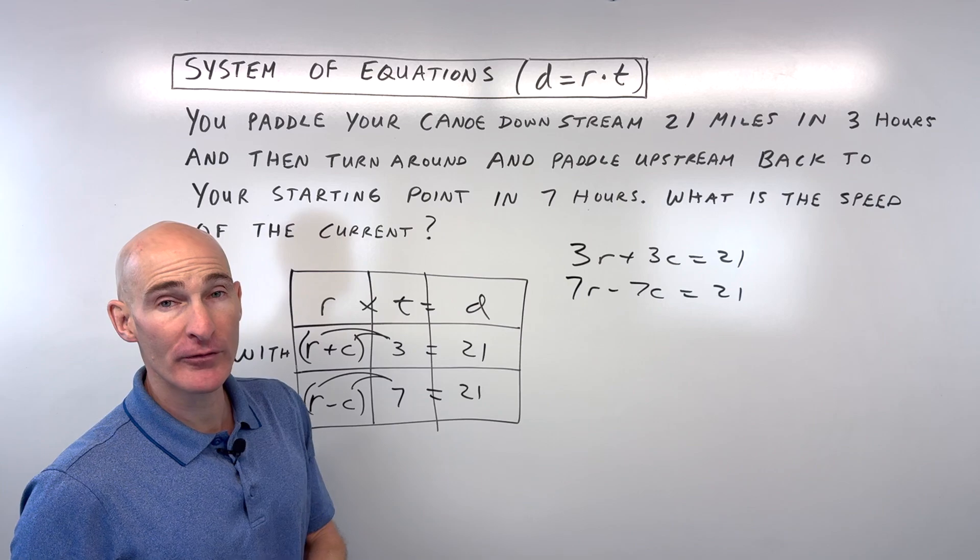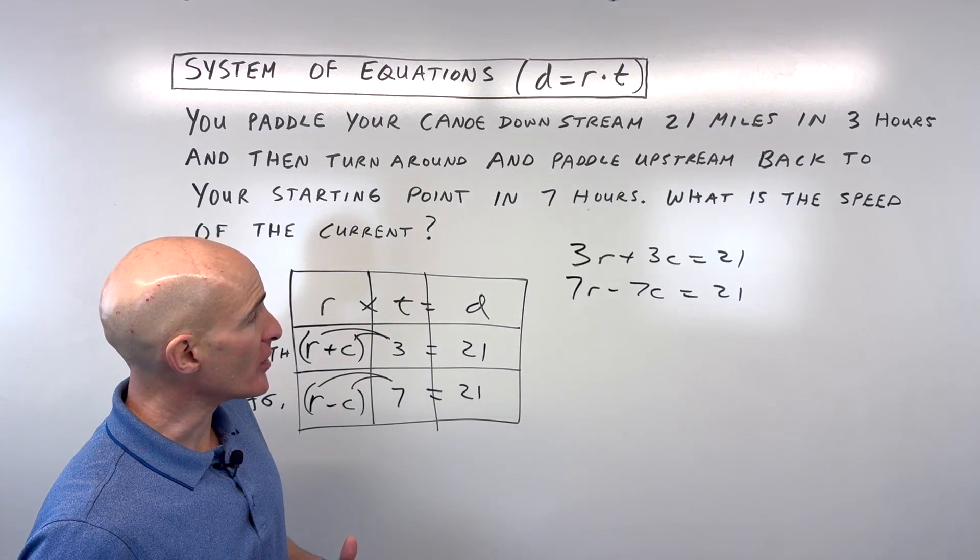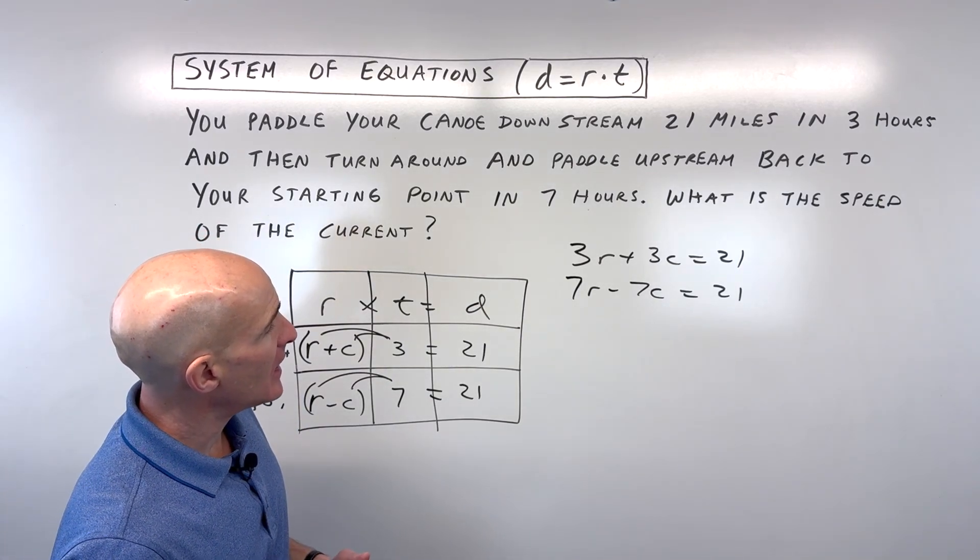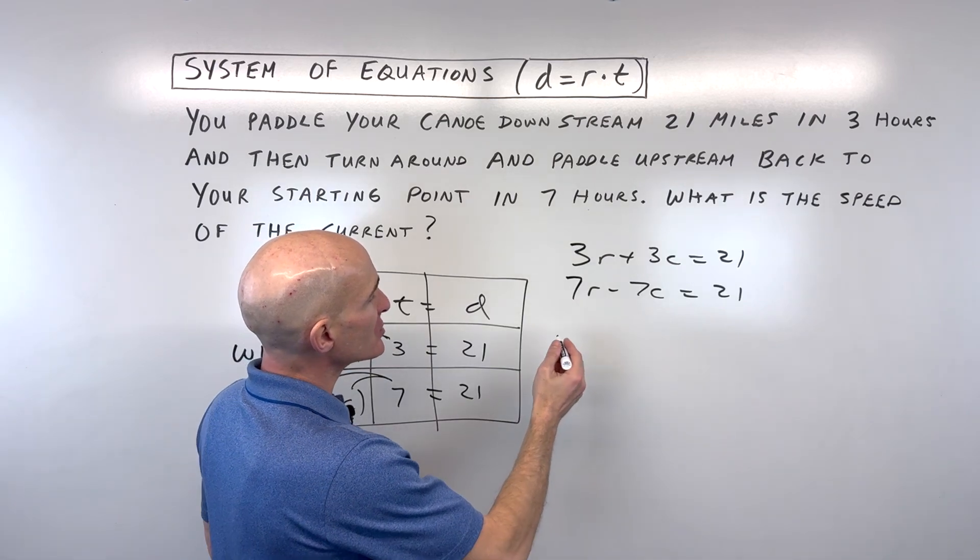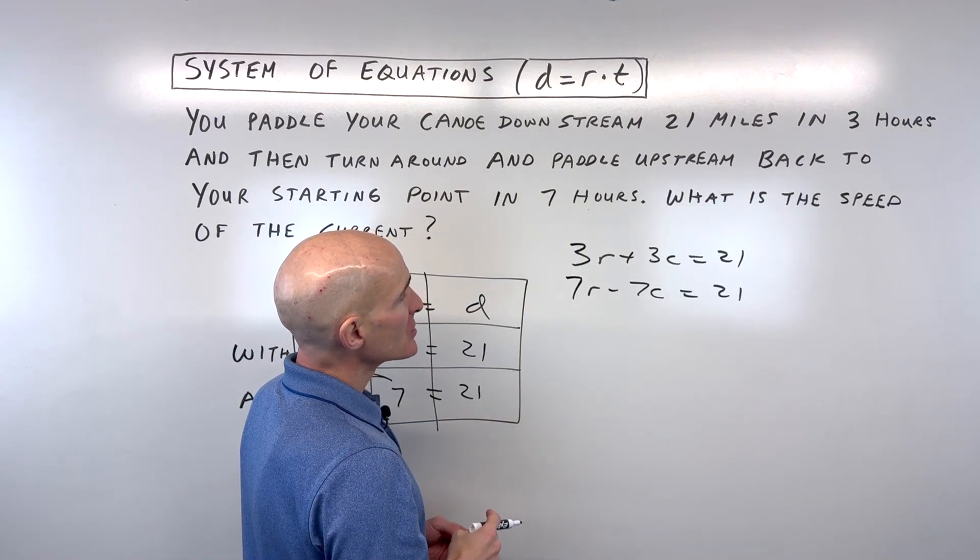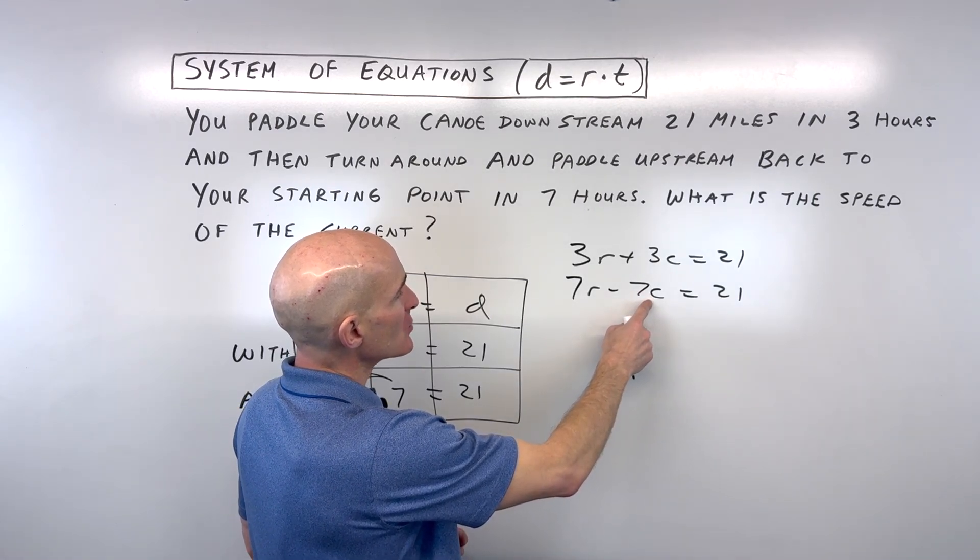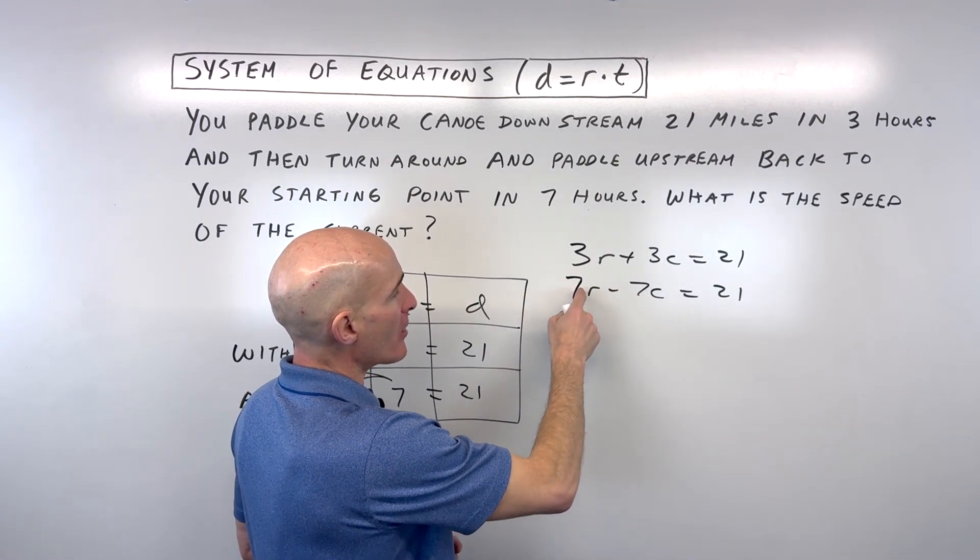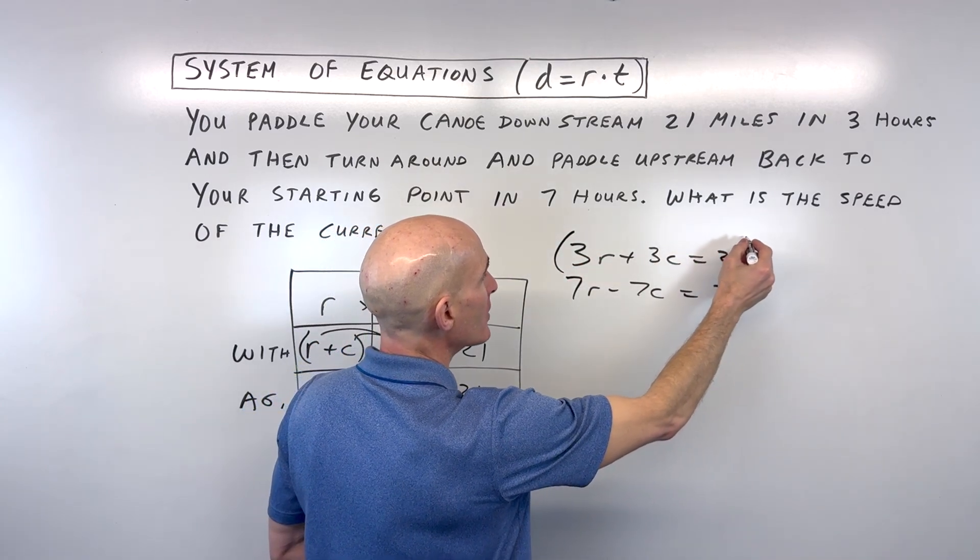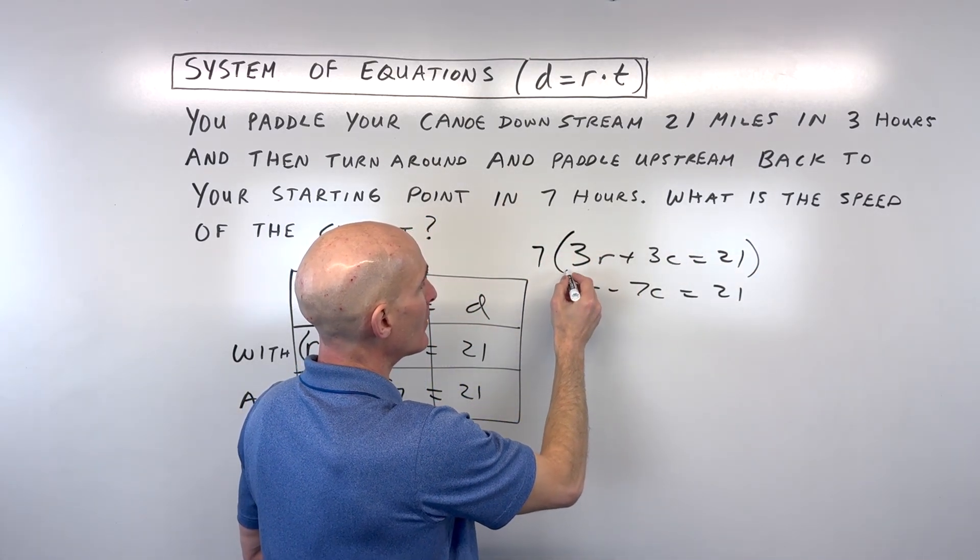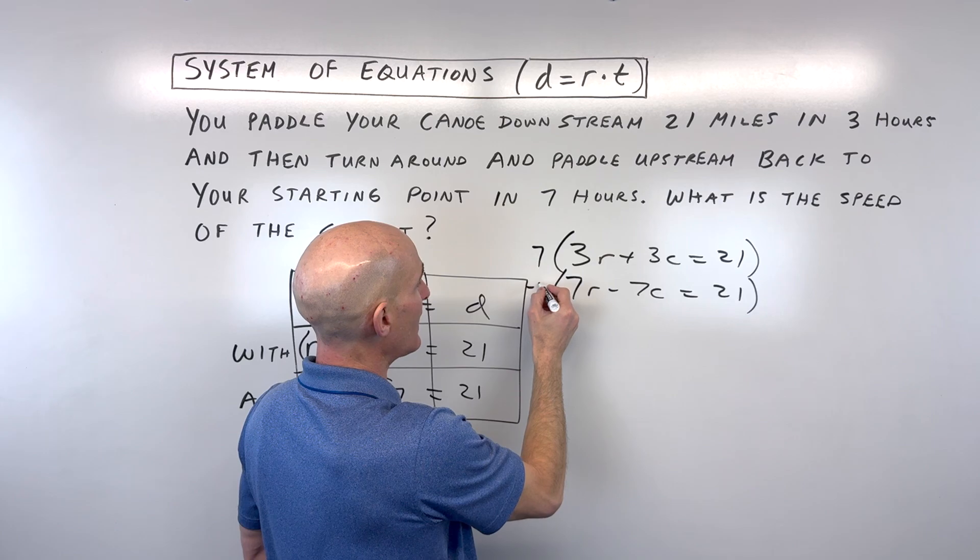Now we want to solve for the speed of the current. You can do this a couple of different ways, but in this case let's go ahead and do the elimination method. We want to solve for the speed of the current C, so let's see if we can eliminate the R's here. Let's multiply this top equation by 7 and let's multiply this bottom equation by negative 3.